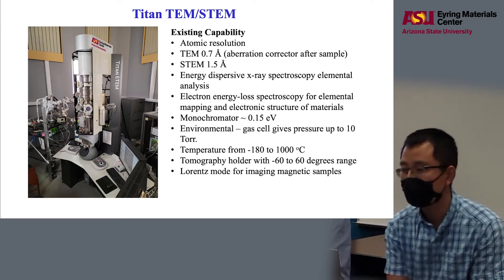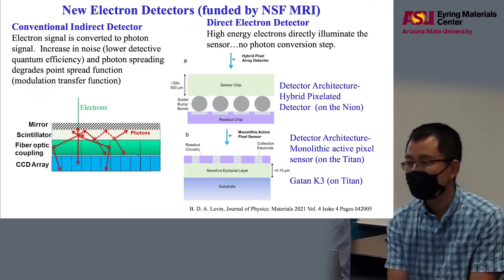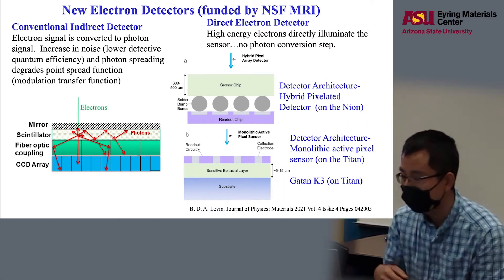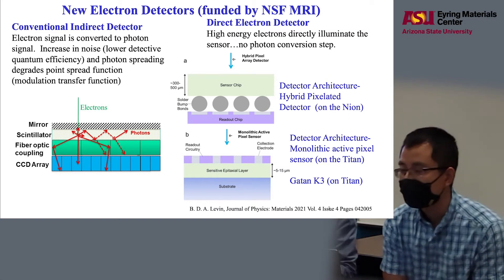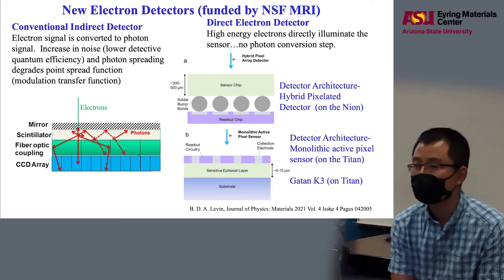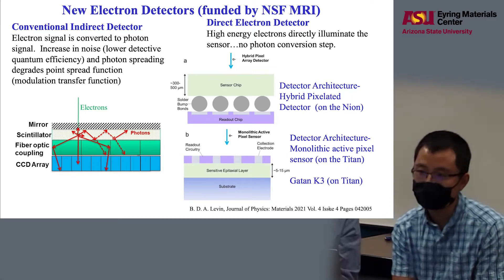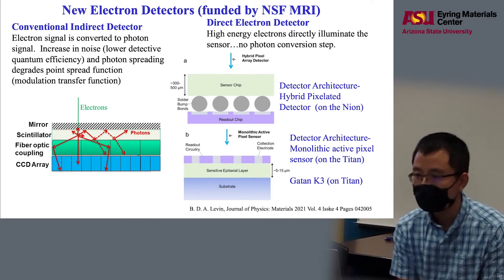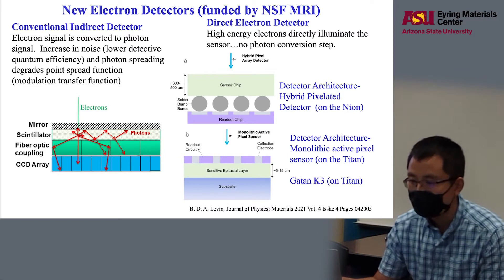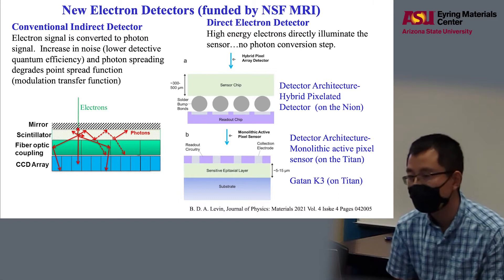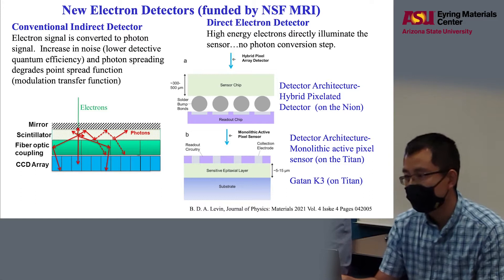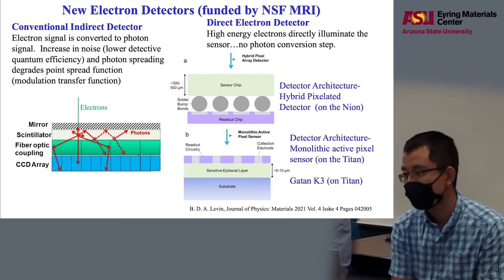It also has fluorescence mode for imaging magnetic materials. The new detector, which is funded by an NSF proposal led by Peter — I will briefly review the improvement of the new detector. For a conventional detector, the electron signal is converted first to a photon signal, and during the conversion process, there is some reflection in the scintillator layer, which will degrade the spatial resolution. With the new direct electron detector, the spatial resolution can be greatly enhanced.